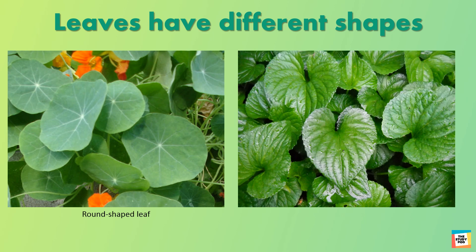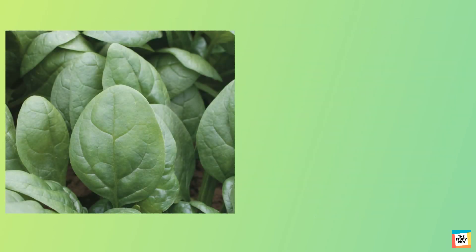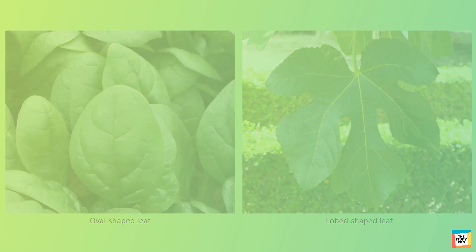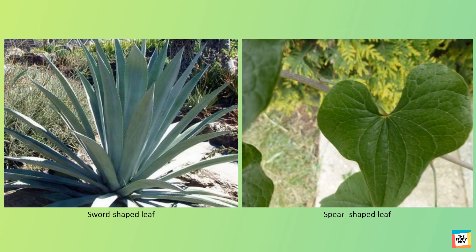Leaves also have different shapes. Observe the difference in the shapes of these leaves. Leaves can also be oval or lobed shape. They can be sword shaped or spear shaped too.